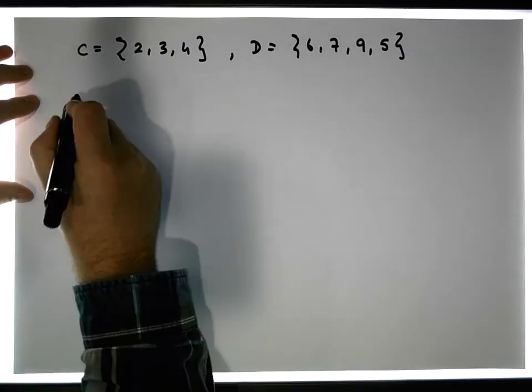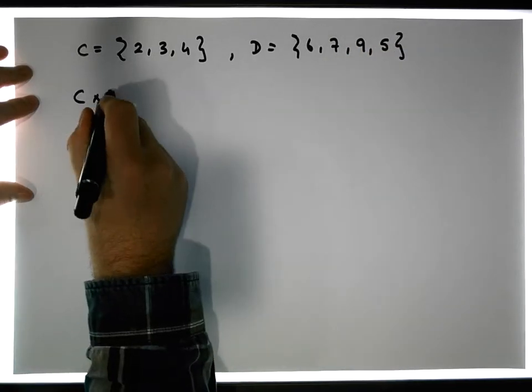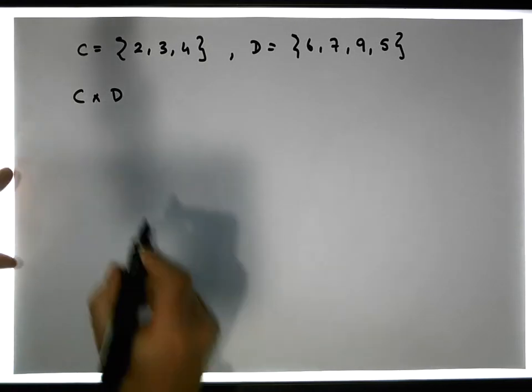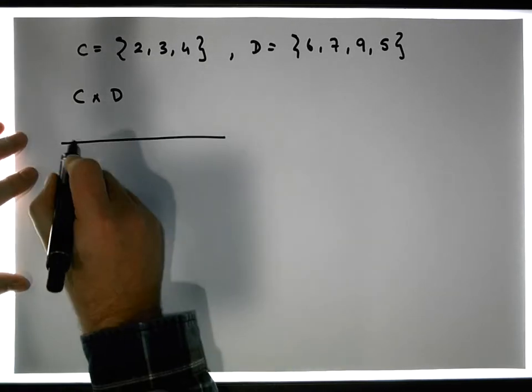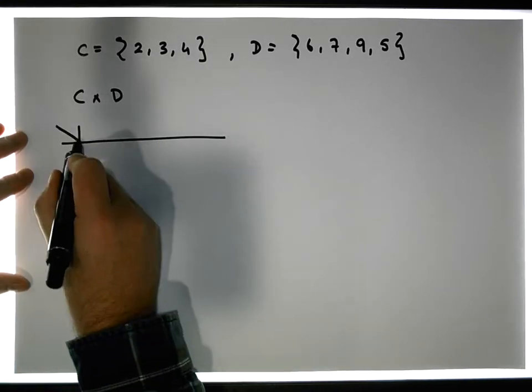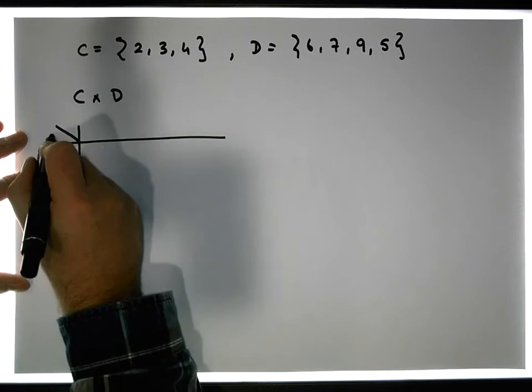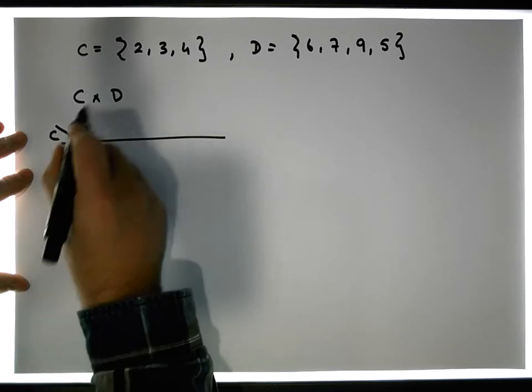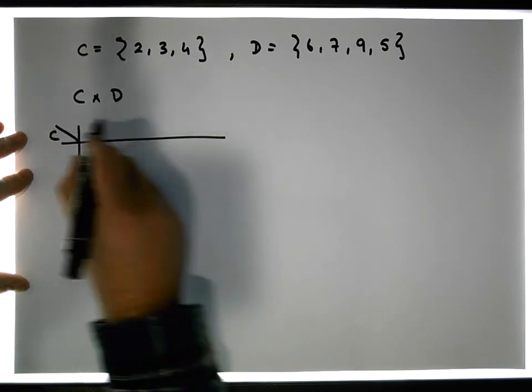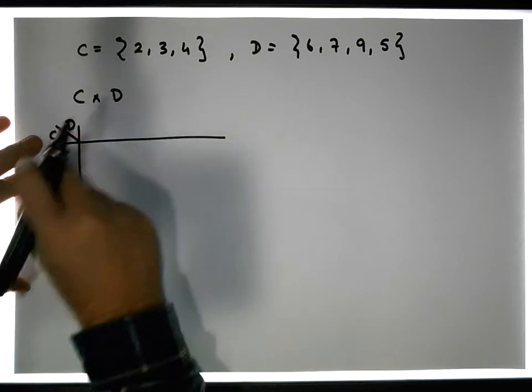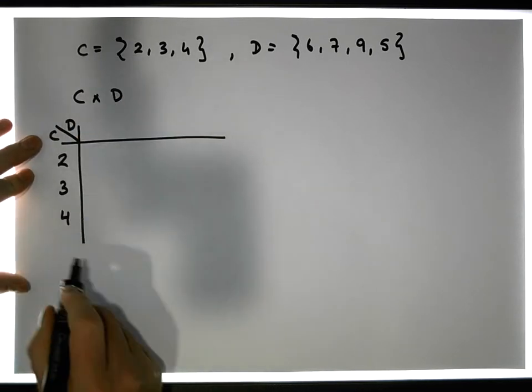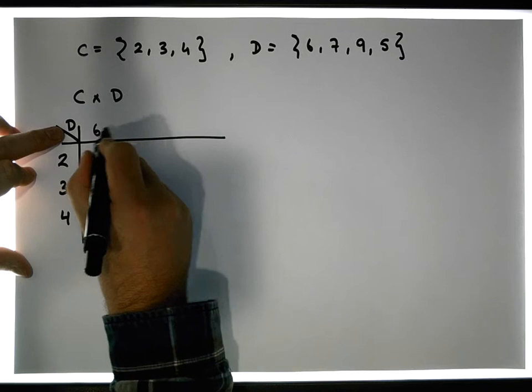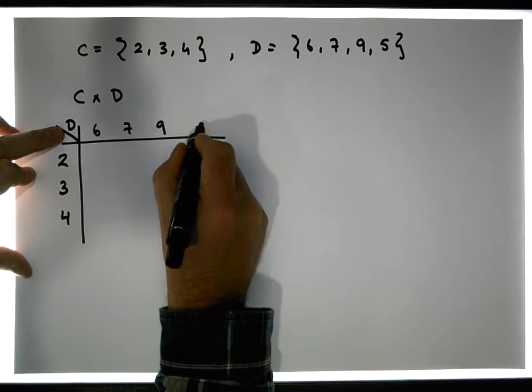And what we want to do is we want to construct C cross D, the cross product of C with D. Once again, we construct our table. Our domain elements are listed now in the first column, which is the set C. And our range elements, D, are listed across the first row. So let's take C, which is 2, 3, and 4. And let's take D, which is 6, 7, 9, and 5.